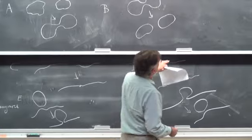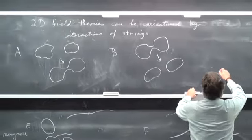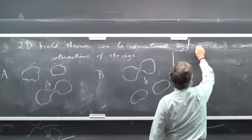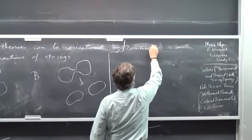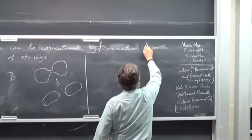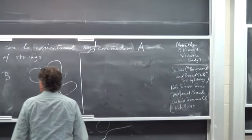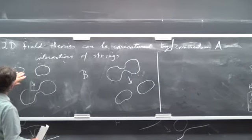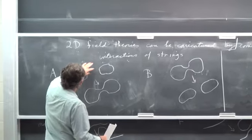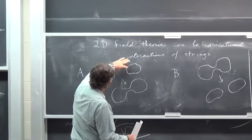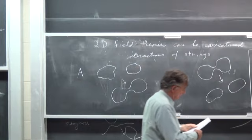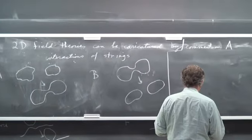Let's talk about interaction A. First of all, A is very homogeneous — it looks the same no matter where this interaction took place. There's no boundary or anything. That's a key feature.